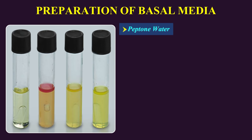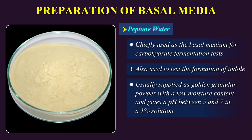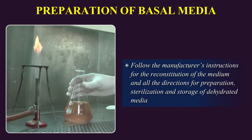Preparation of Basal Media — Peptone Water. This medium is chiefly used as the basal medium for carbohydrate fermentation tests. It is also used to test the formation of indole. It is usually supplied as a golden granular powder with a low moisture content and gives a pH between 5 and 7 in a 1% solution. It is hygroscopic and hence the stock bottles should be kept firmly closed. Follow the manufacturer's instructions for reconstitution and all directions for preparation, sterilization, and storage.